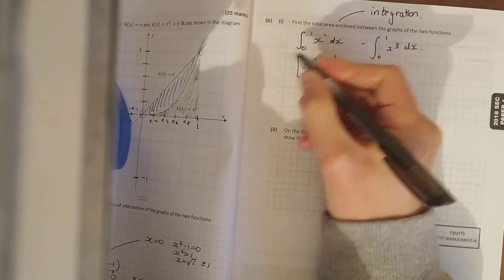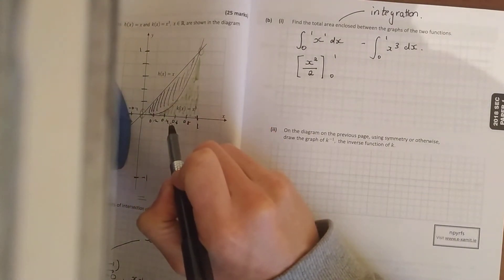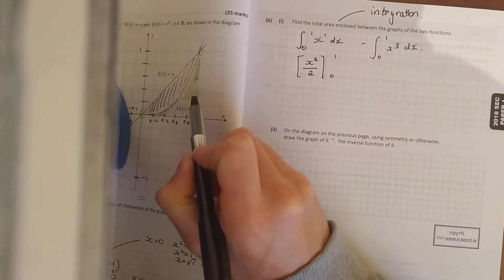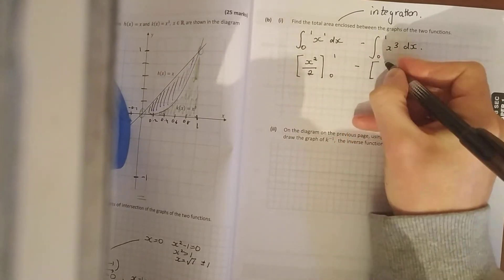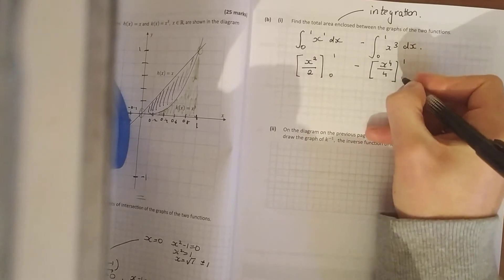So 1 goes up to 2, divided by the new power, and your limits are between 1 and 0. As I say, for this first bit you could have treated as a right angle triangle and got half the base, so half of 1 is a half times the height. So the area, this should work out to be a half.